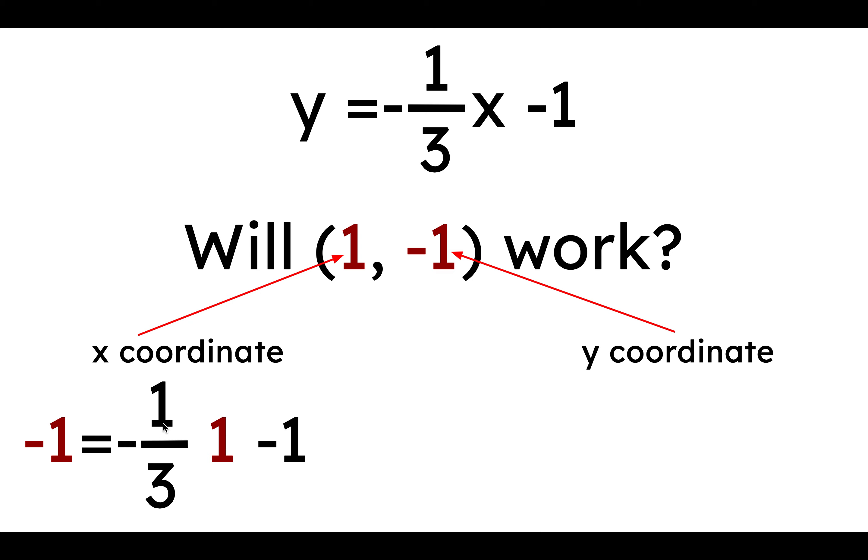So let's plug it in. Negative 1 is equal to negative 1 third times 1 minus 1. So let's multiply negative 1 third by 1. We get negative 1 third over here. Everything else sort of stays the same. And then negative 1 third minus 1 gives us negative 2 thirds. Negative 1 does not equal negative 2 thirds.